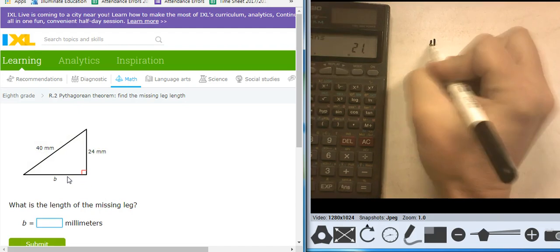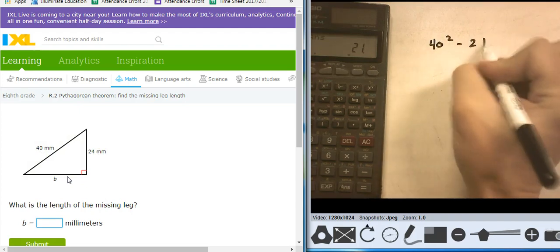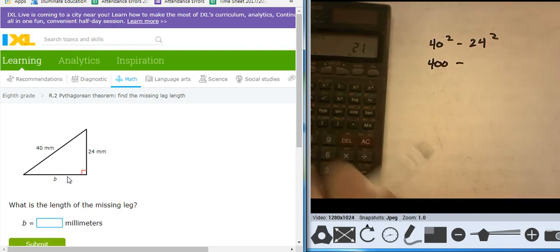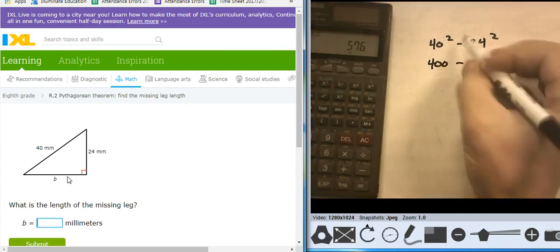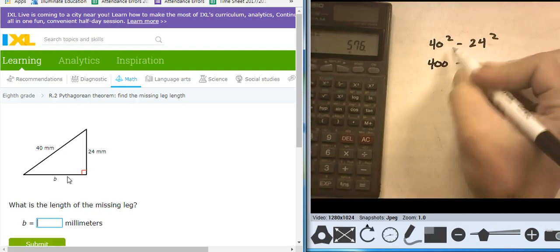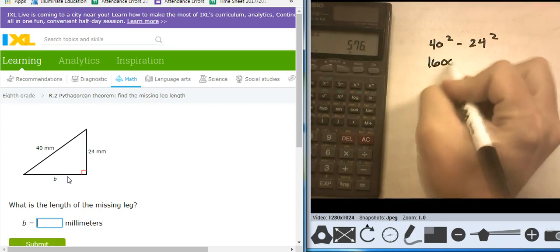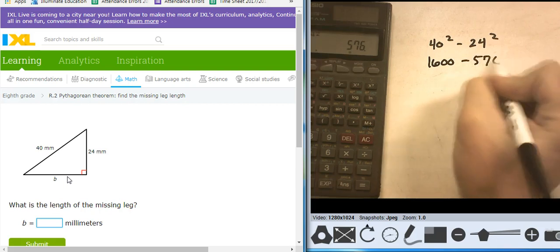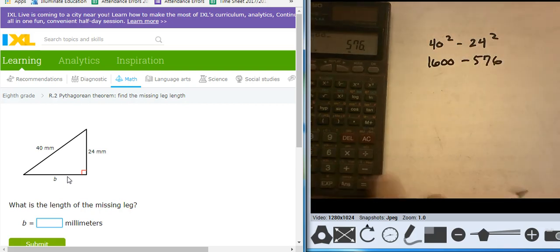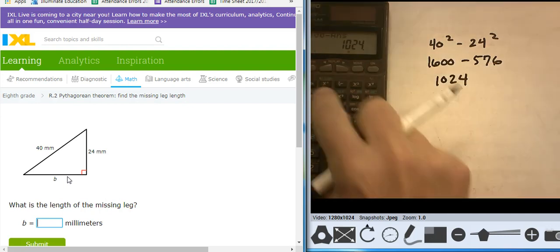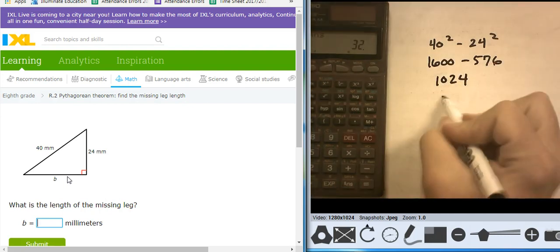40 squared minus 24 squared. 40 squared, so that's going to be 400 minus whatever 24 squared is. That is not 400, that should be 1,600. 1,600 minus 576 takes me to 1,024. Take the square root of that, takes me to 32.